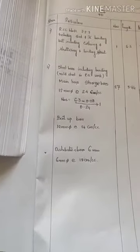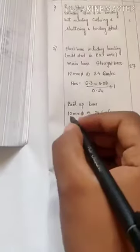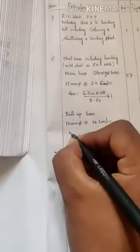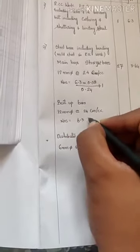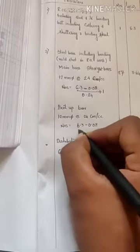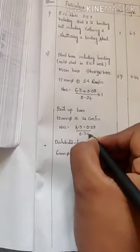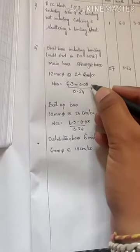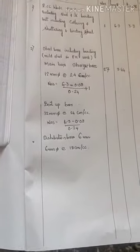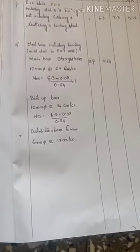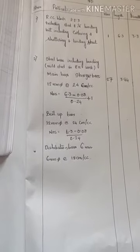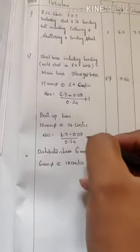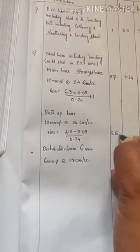Similarly, calculate the number of bent-up bars required. Bent-up bars are also placed along the 6 meter length. Number = (6.3 − 0.08) ÷ 0.24, but do not add plus 1 here. Because you start with a straight bar, you end with a straight bar — so bent-up bars will be one less than straight bars. Calculating this gives number of bent-up bars as 26.